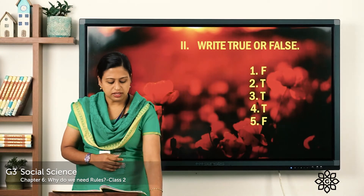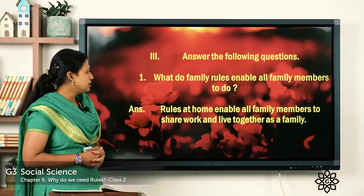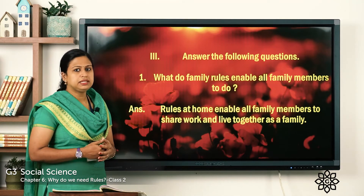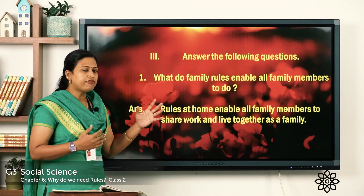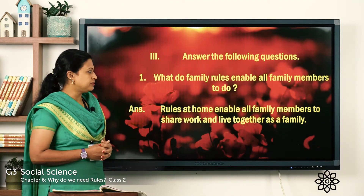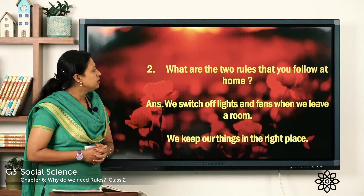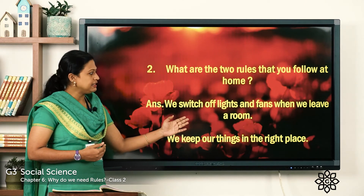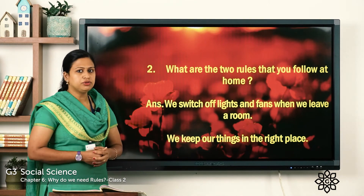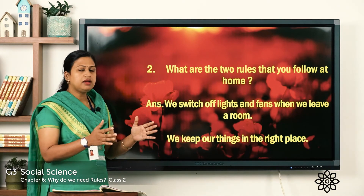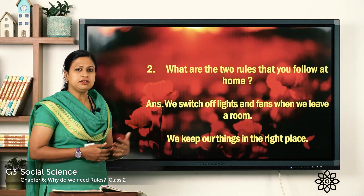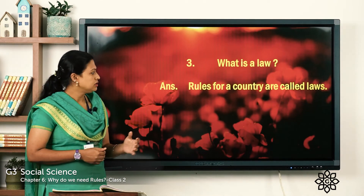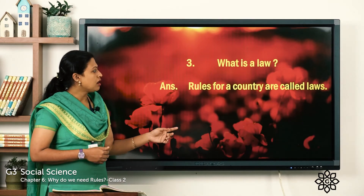Now let's move to the third exercise: answer the following questions. First question — what do family rules enable all family members to do? Answer: rules at home enable all family members to share work and live together. Second question — what are the two rules that you follow at home? First, we switch off lights and fans when we leave a room. Second, we keep our things in the right place. If you have a different answer, you can write it. Third question — what is a law? Answer: rules for a country are called laws.